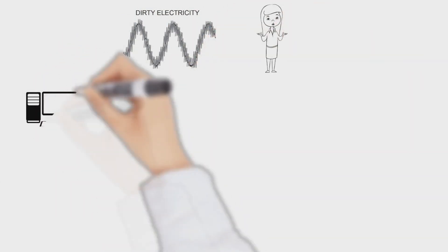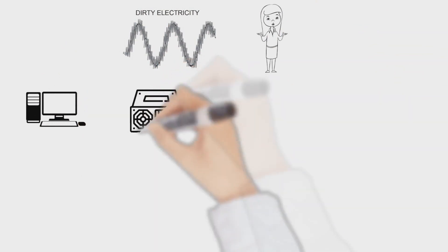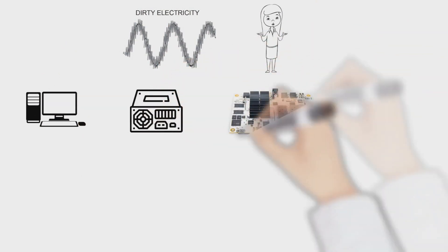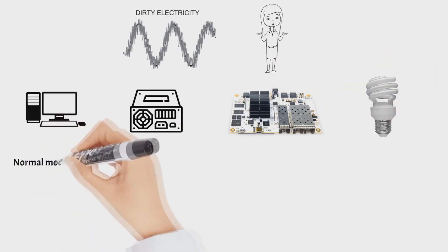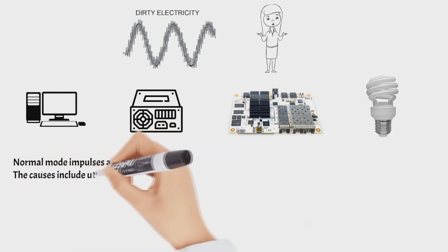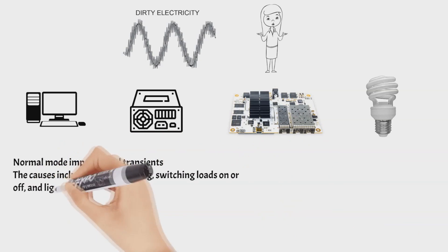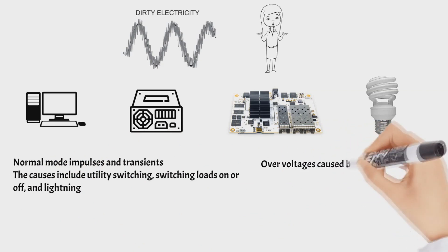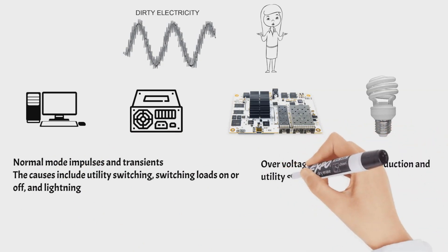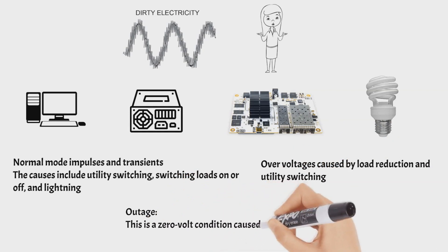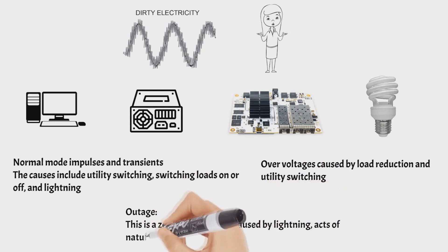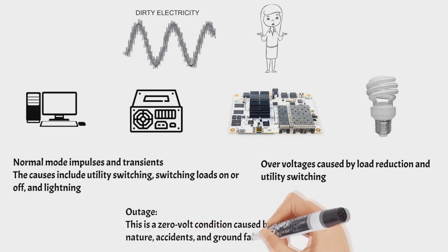Dirty electricity can come from computers, power supplies, power electronics, and compact fluorescent lamps. It can also come from normal mode impulses and transients such as utility switching, switching loads on or off, and lightning. It can be caused by overvoltage from load reduction and utility switching, and by outages—a zero volt condition caused by lightning, accidents, nature, or equipment failure such as the failure of phases of an electrical machine or transformer.